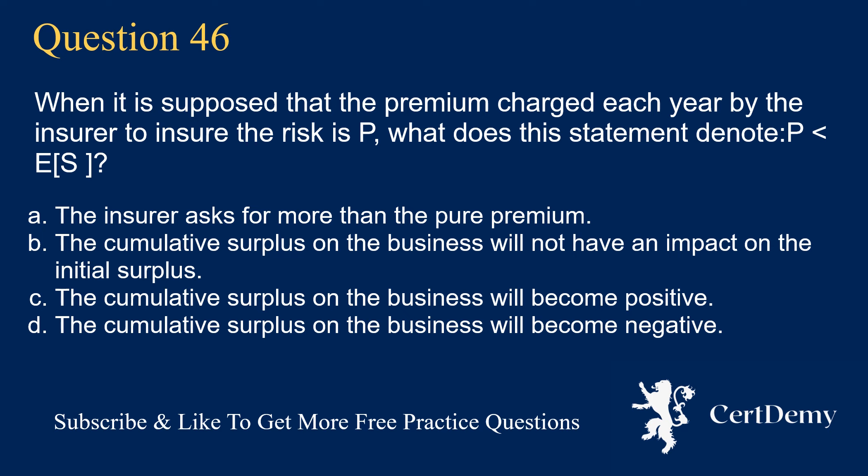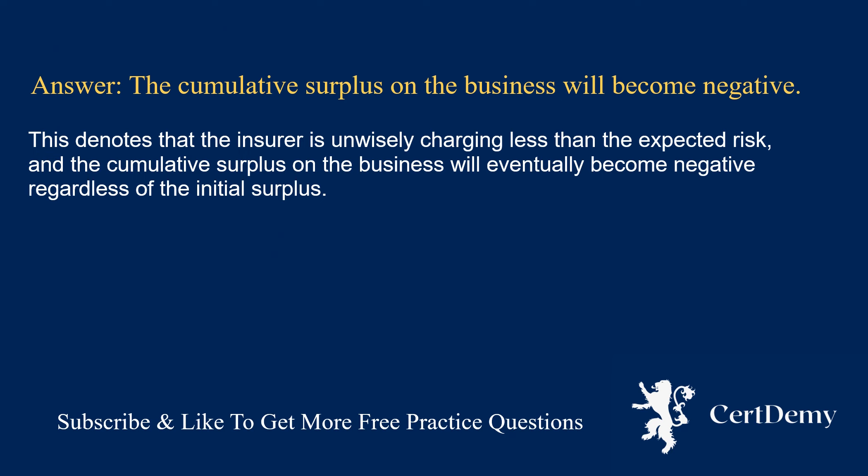Question 46. What does the statement denote when the insurer asks for less than the pure premium? Options: the cumulative surplus on the business will not have an impact on the initial surplus; the cumulative surplus will become positive; the cumulative surplus will become negative. The answer is: the cumulative surplus on the business will become negative. This denotes that the insurer is unwisely charging less than the expected risk, and the cumulative surplus on the business will eventually become negative regardless of the initial surplus.